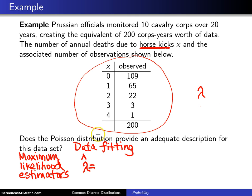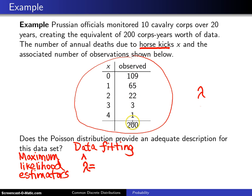There is a difference between the estimator lambda-hat and the population value lambda. In any case, it turns out that lambda-hat for the Poisson distribution — the maximum likelihood estimator — is simply the average of the 200 data values.